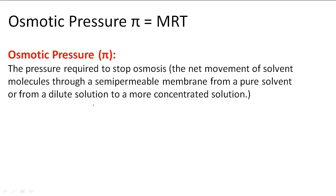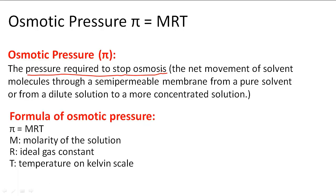So they're going from a place of high concentration to a low concentration. It's the pressure that's required to stop osmosis from happening. And we use this formula to figure out what osmotic pressure is.